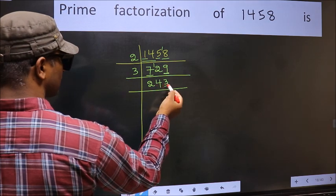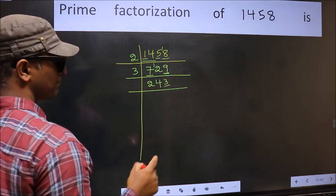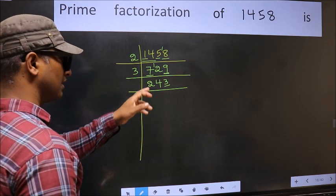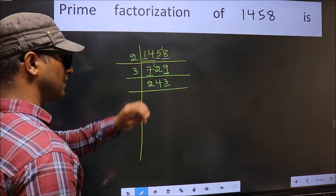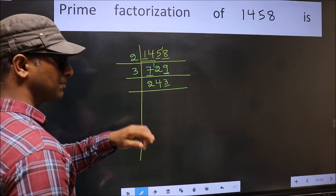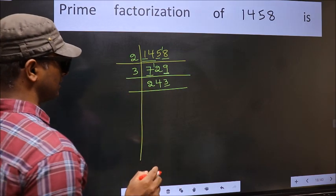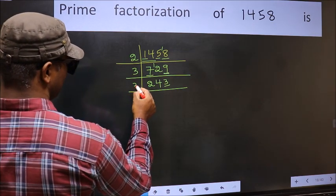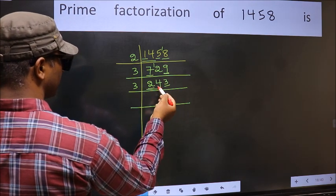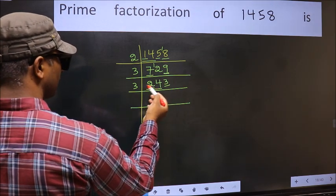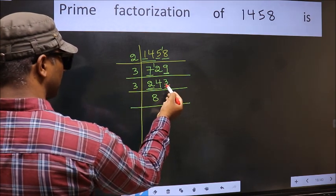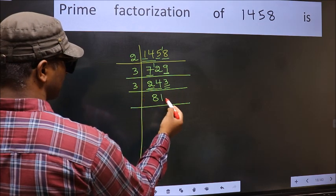Last digit 3 is not even so not divisible by 2. To check divisibility by 3, we add the digits: 2 plus 4 plus 3, we get 9. 9 is divisible by 3, so this number is also divisible by 3. Take 3 here. First number 2 is smaller than 3 so take 2 numbers: 24. When do we get 24 in the 3 table? 3 eights 24. The other number is 3. When do we get 3 in the 3 table? 3 ones 3.